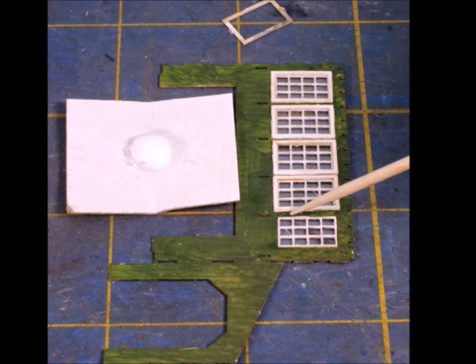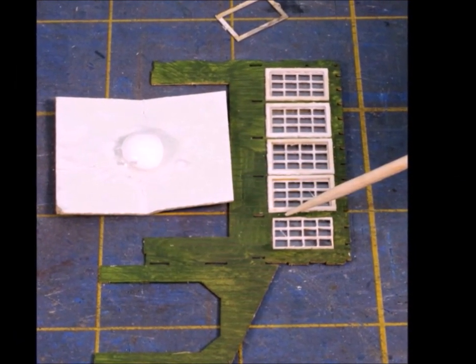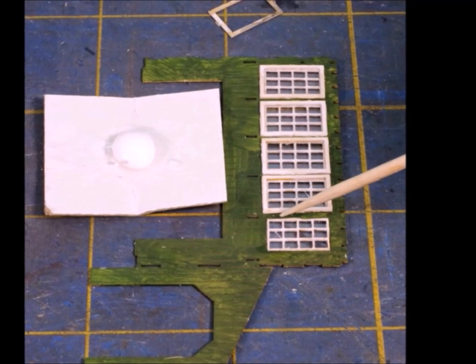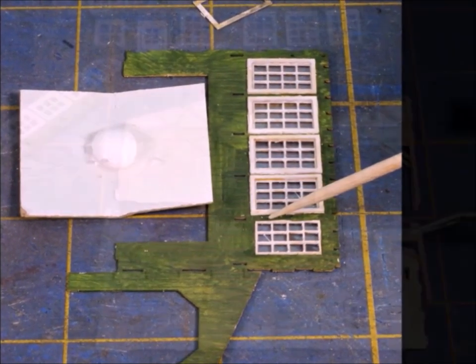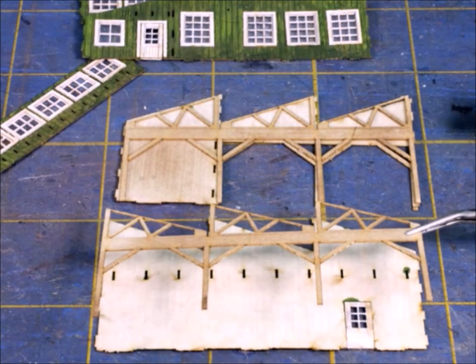Then of course you have to put the window trim on. What I find works really well is to run a little bead of glue along the edge of the window after you put it in, and then you just set the window sill on top of it. You don't glue the window until after it's already in.